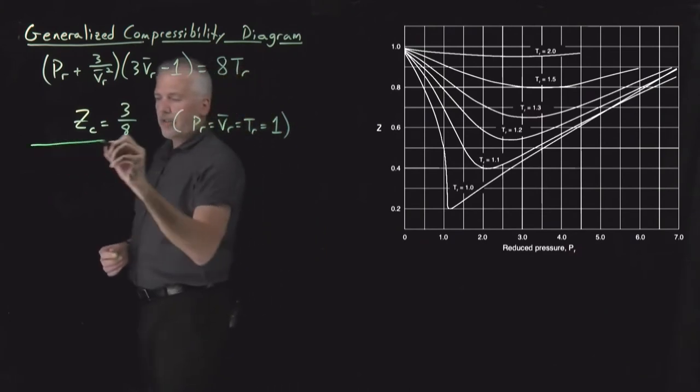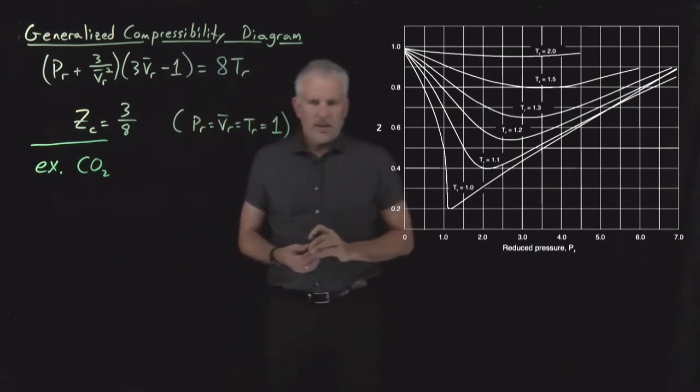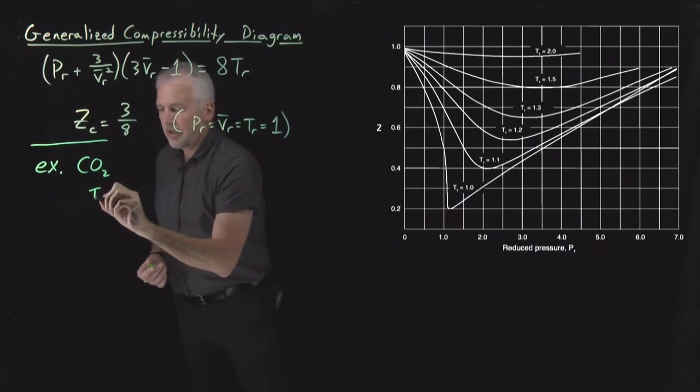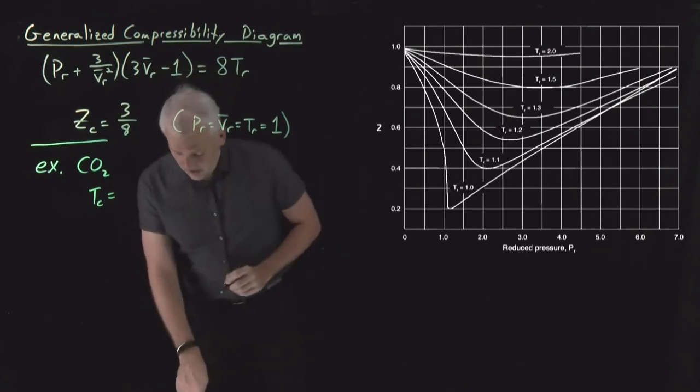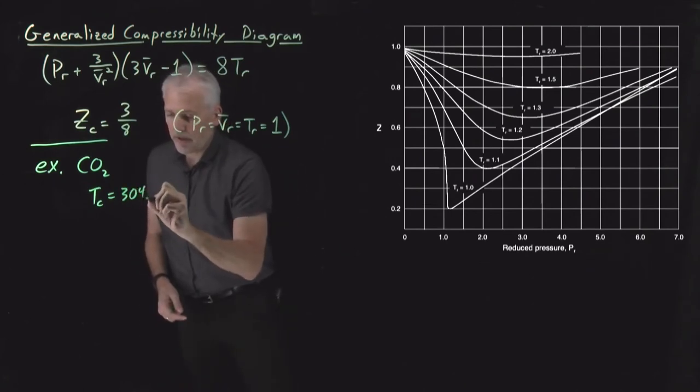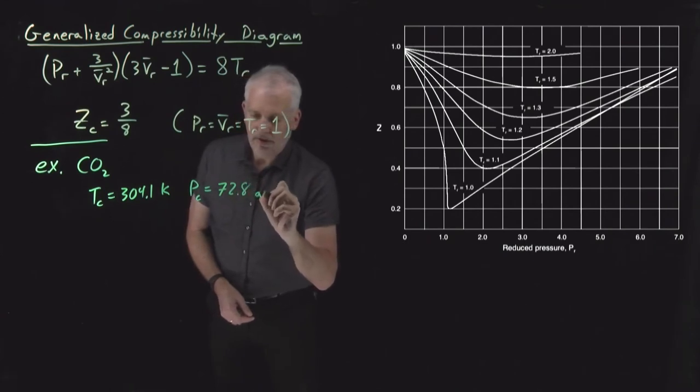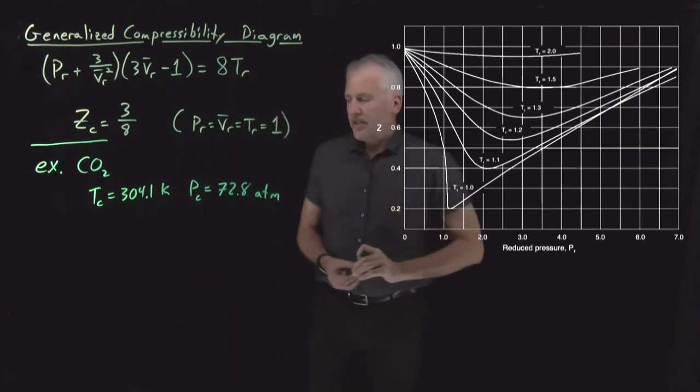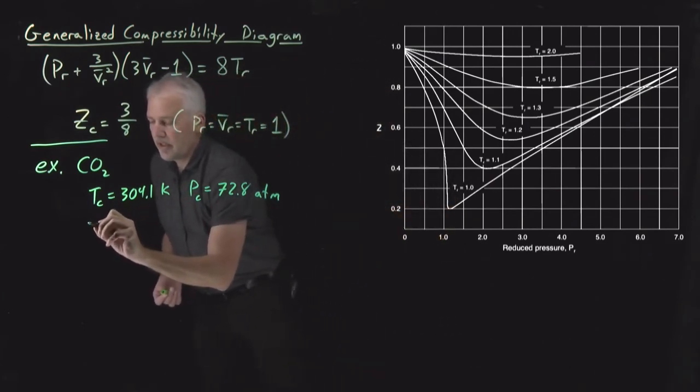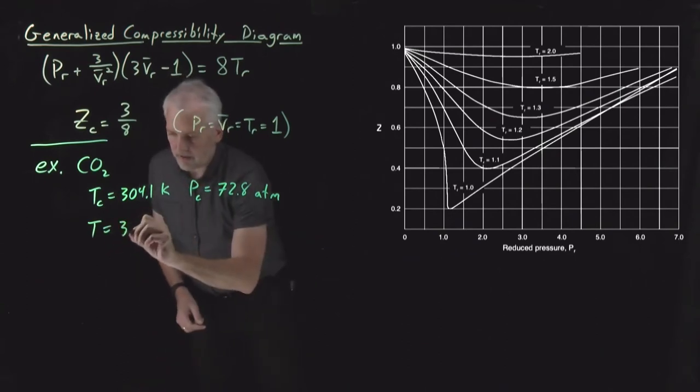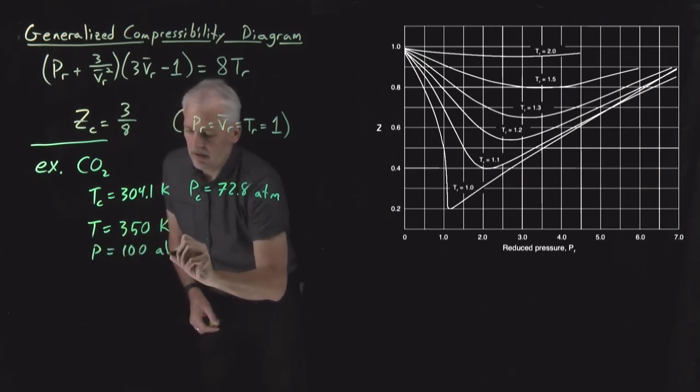So just to get an example to see how that works, let's do a numerical example. Let's say we're interested in CO2. CO2 is a gas that has a fairly low critical temperature. In fact, it's often used to do supercritical, used as a supercritical solvent. So let's see, the critical temperature of CO2 is about 304 Kelvin. Its critical pressure is 72.8 atmospheres. So let's say I'm interested, so those are just properties of CO2.